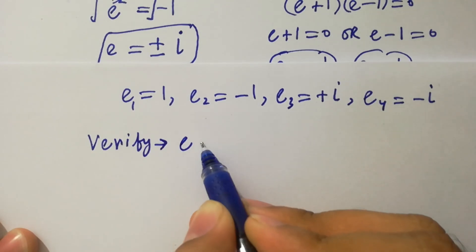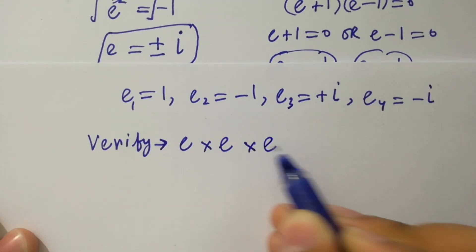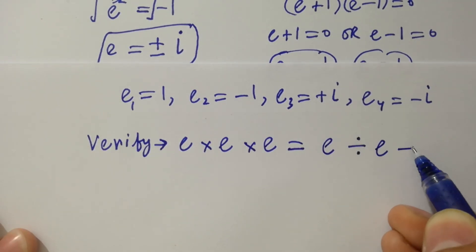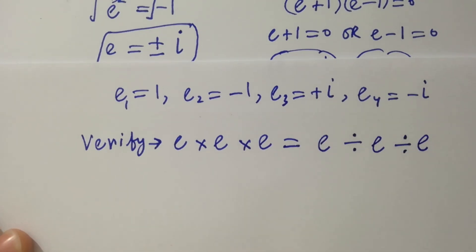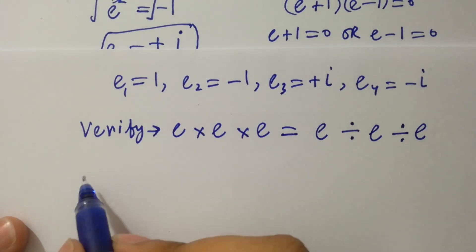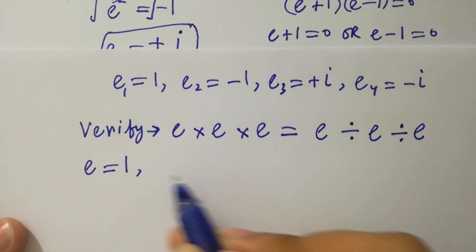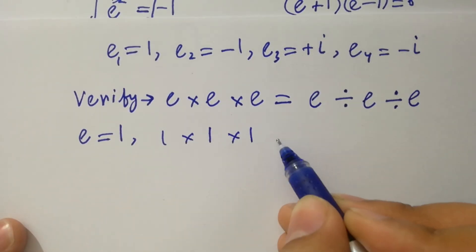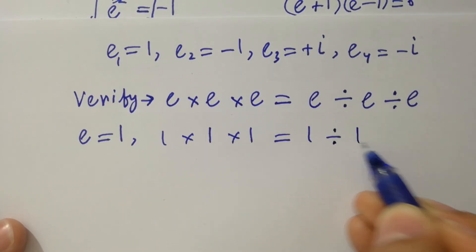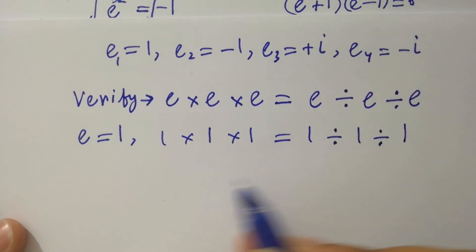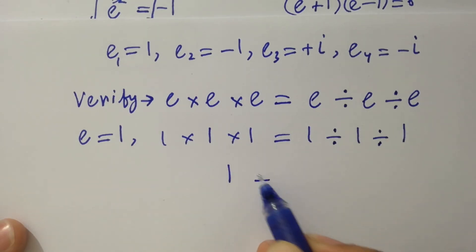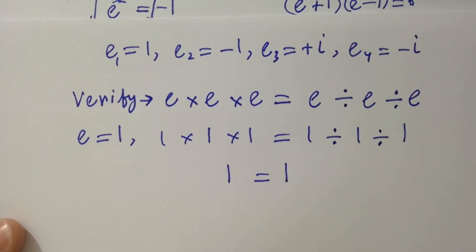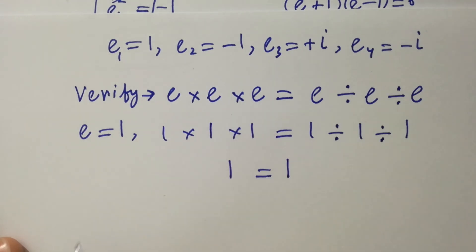Verify: e times e times e equals e divided by e divided by e. First, take e equals 1. Then it will be 1 times 1 times 1 equals 1 divided by 1 divided by 1. The left hand side equals 1, and the right hand side equals 1. Left hand side equals right hand side.